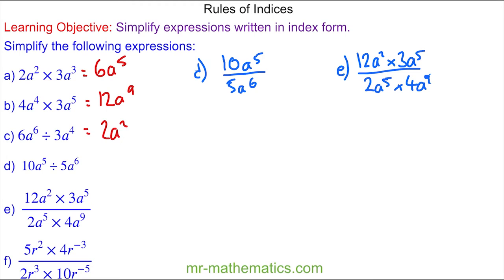For question D, I've written it as a division, so we have 10 divided by 5 which is 2, and then we have the division rule. We've got the same base, so it's 5 take away 6, and 5 take away 6 is negative 1, so we have 2a to the negative 1.